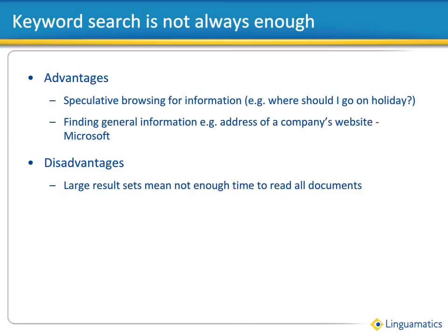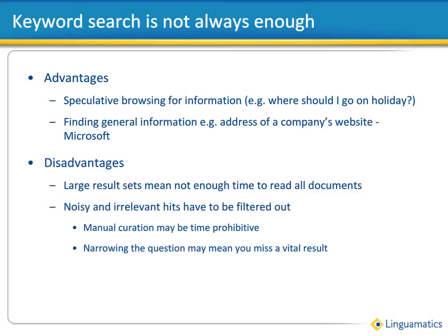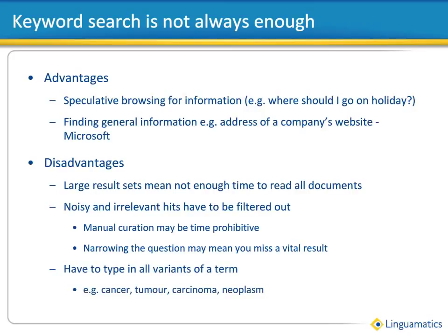To reduce the result set down, you may have to narrow the search to get rid of noisy or irrelevant hits. However, care has to be taken to avoid narrowing it so much that you may miss a result. To make sure you get good recall and find all the results you are interested in, you typically have to type in all the various ways the word may be expressed in the text. For example, cancer may be found as carcinoma, tumour or neoplasm. When something can be expressed in tens, hundreds or even thousands of different ways and you have to type them all in, it becomes unwieldy and impractical.